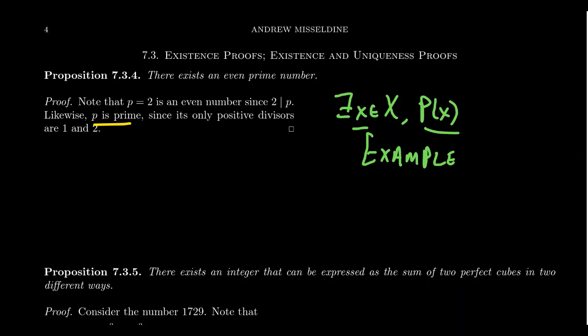Because the only divisors of 2 are 1 and 2. And therefore, we have an even prime number. 2 is an even prime number. That's all that you have to show to prove it. I've now provided the object, and we know there's an even prime number now.